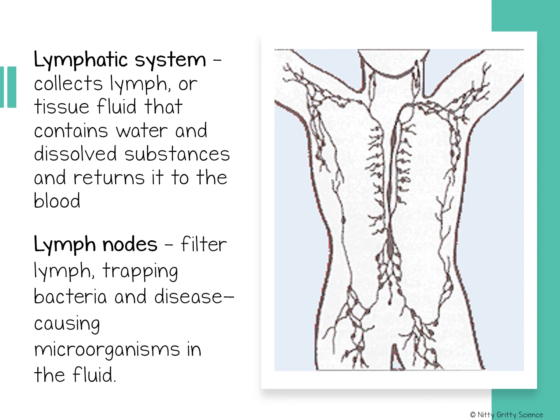When fluid is inside the lymphatic system it is called lymph, and this lymph moves slowly through the system because there is no pumping system. As lymph slowly flows through, it passes through lymph nodes, which act like a filter and serve as an extra backup system that traps bacteria and other disease-causing microorganisms. You might notice your lymph nodes become swollen and enlarged when your body is fighting an infection, and once you start feeling better, the lymph nodes reduce in size.